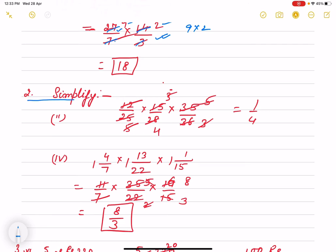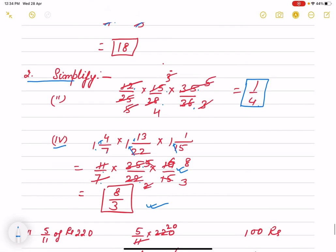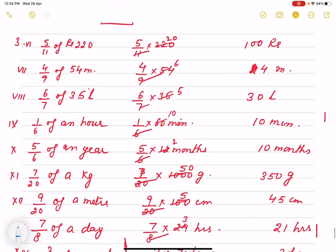Simplification. Multiplication and fraction is there. You have to reduce: 12 by 25, 15 by 28 and 35 by 36. If you cancel numerator and denominator, you are getting 1 by 4. Same way, question number 4 also: 7, 1-ja, 7 plus 4, 11 by 7. 12, 22, 1 and 13 added is 35 by 22. 15, 1-ja plus 1, 16 by 15. And after cancellation, we are getting 8 by 3.